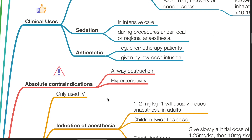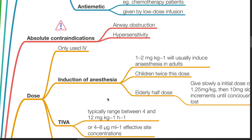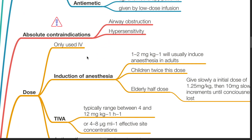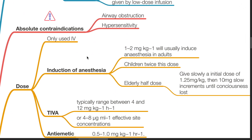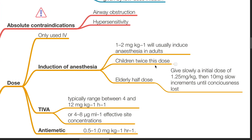Absolute contraindications include airway obstruction and known hypersensitivity. It should only be used intravenously. The induction dose is 1 to 2 mg per kg in adults; children should receive twice this dose, and the elderly should receive half this dose.